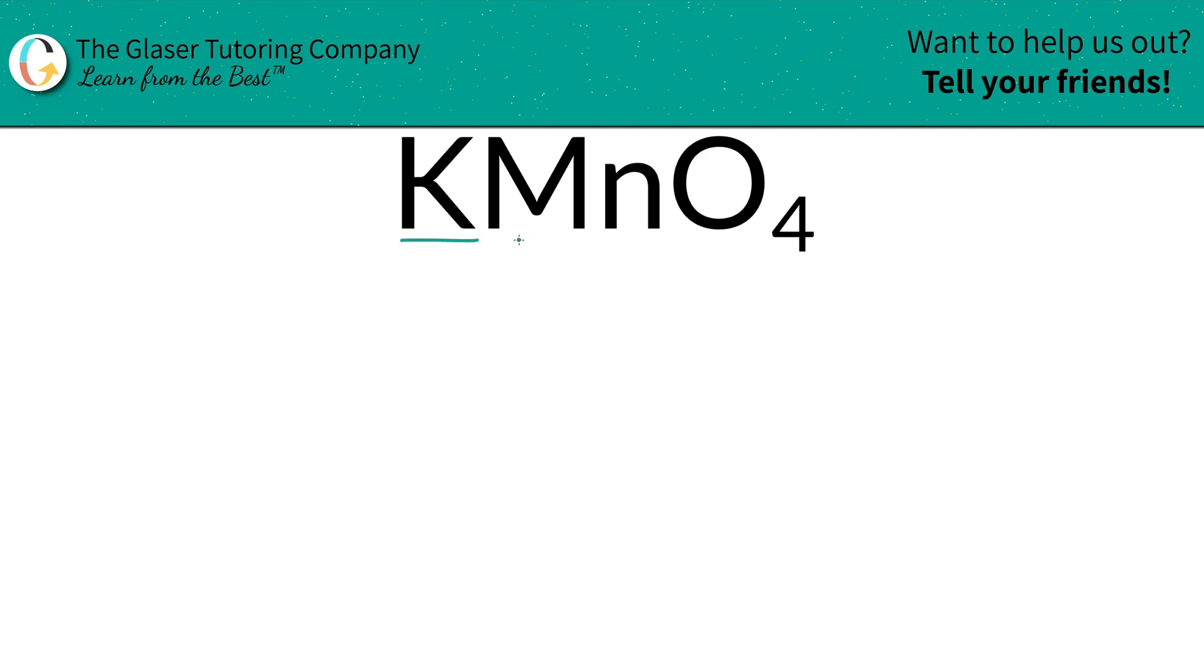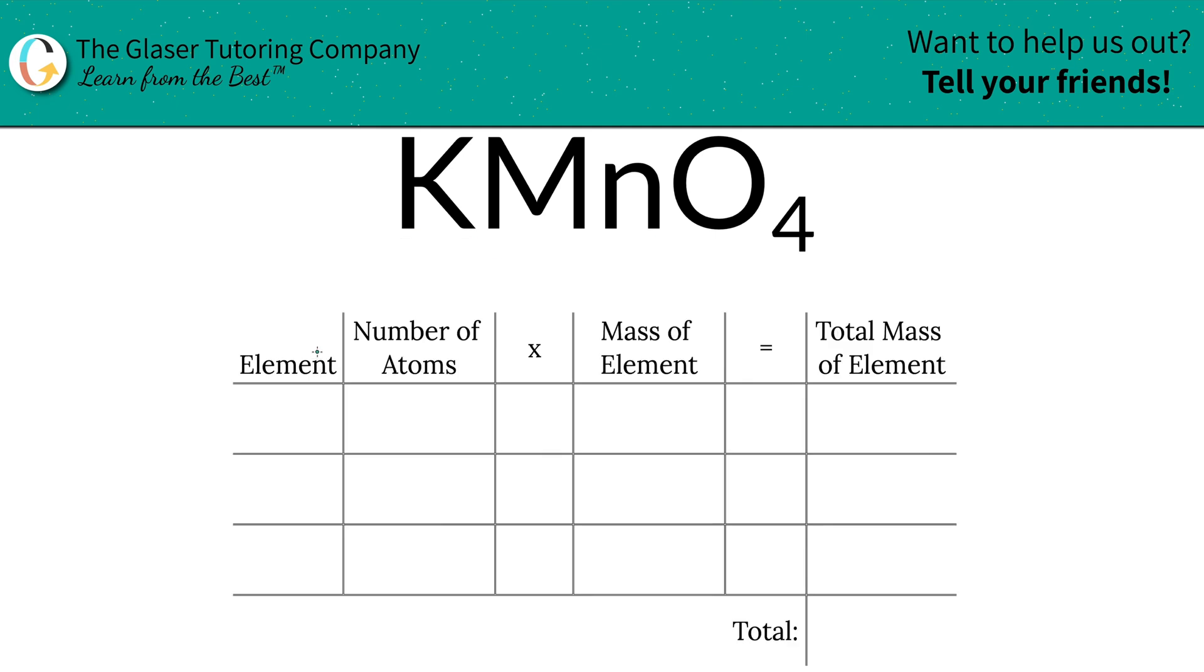So how do we find the percent compositions of each element inside of potassium permanganate? We've come to the right place. First we've got to find the total mass and then we can find those percentages. Watch how easy this is.